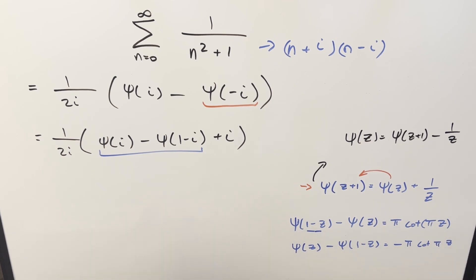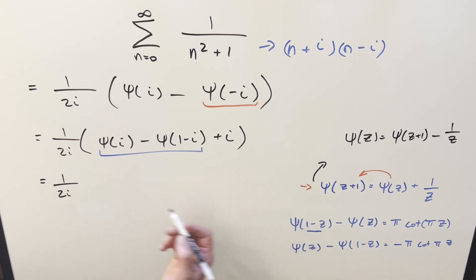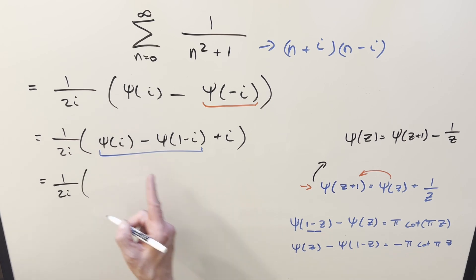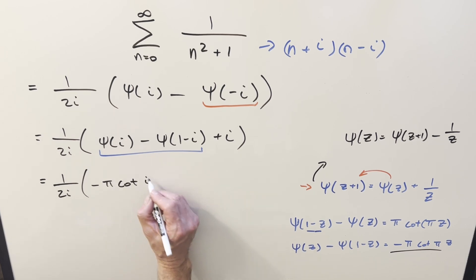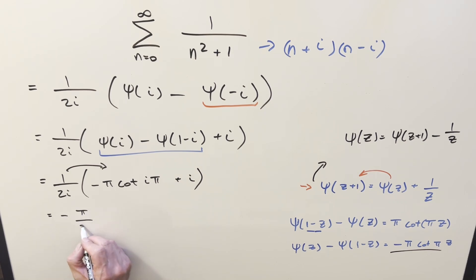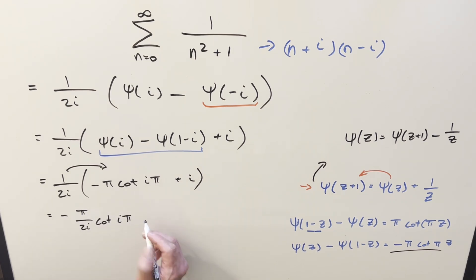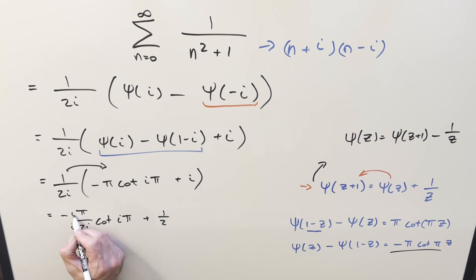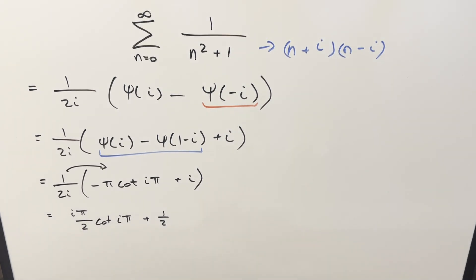I'll distribute the 1 over 2i in at this point. With the first term we have minus π over 2i times cot(iπ). Then the i's cancel in the second term and we just get plus 1/2. I'll multiply by i in that first term: i times i is −1, and with the minus sign this becomes a plus. So the factor in front becomes π over 2. Now I want to deal with this cotangent(iπ) — I don't like having the complex input on it.